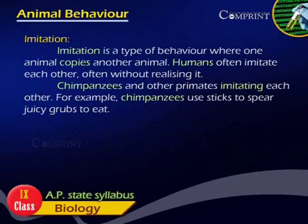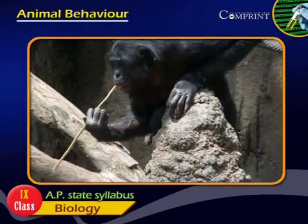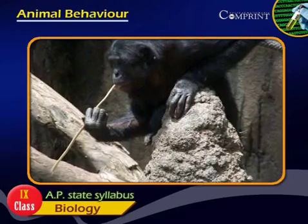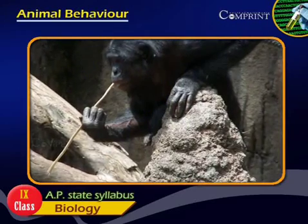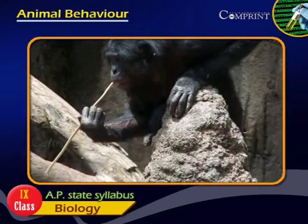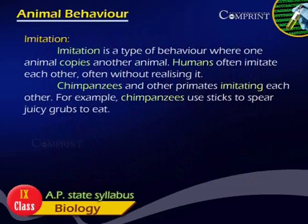Imitation. Imitation is a type of behavior where one animal copies another animal. Humans often imitate each other, often without realizing it. Chimpanzees and other primates also imitate each other. For example, chimpanzees use sticks to extract juicy grubs to eat.